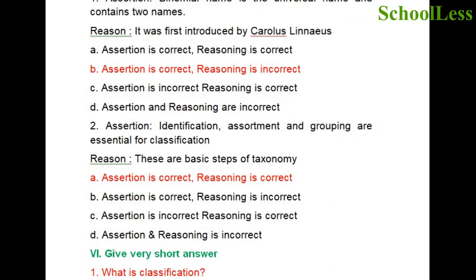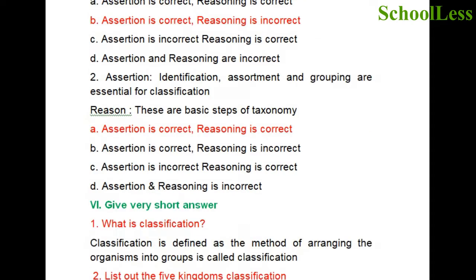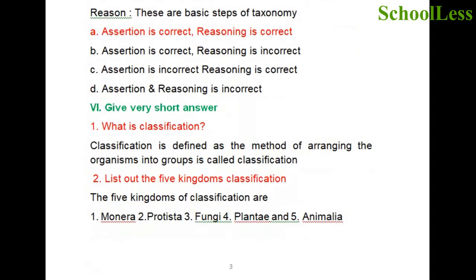Question 2: Assertion: Identification, assortment and grouping are essential for classification. Reason: These are basic steps of taxonomy. In this we find that both assertion and reasoning are correct. Therefore, choice A is the right answer.